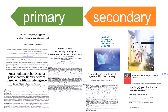Looking at our example question: primary sources might give us information about how an AI technology was implemented at a specific library, or data on customer responses to AI technology used in libraries. Whereas secondary sources might give us an overview of different types of AI technologies that a library might use, trends in the library sector around adopting AI technologies, or literature reviews on the use of AI in libraries or other sectors.